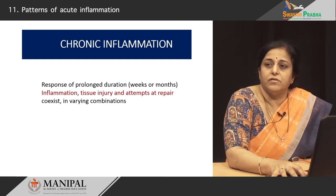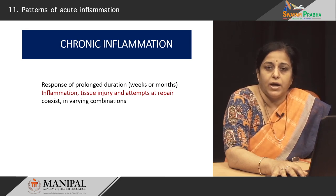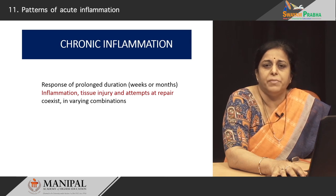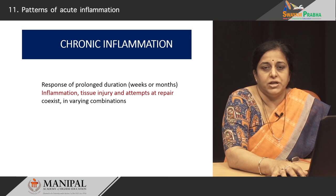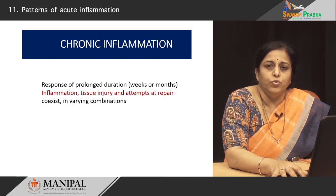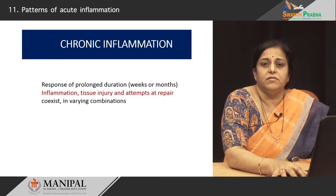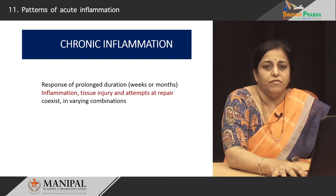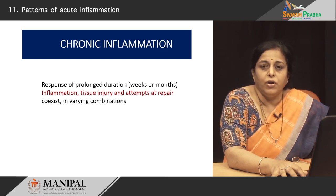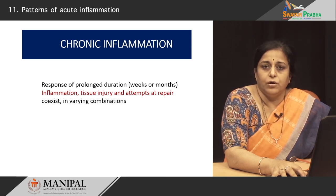We now move on to chronic inflammation. If inflammation is not able to tackle the injurious agent, or there is a persistent infection or persistent injury, then chronic inflammation occurs. By definition, chronic inflammation lasts for a much longer time — while acute inflammation usually takes a few days to a week, chronic inflammation has a prolonged duration of weeks to months. What characterizes chronic inflammation is persistent inflammation and persistent injury occurring simultaneously with repair. Repair is a phenomenon seen in chronic inflammation that you do not see in acute inflammation — there is a lot of fibrosis and scarring occurring alongside the inflammation.